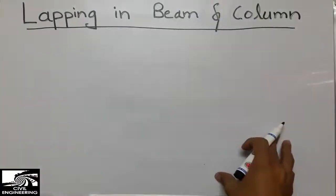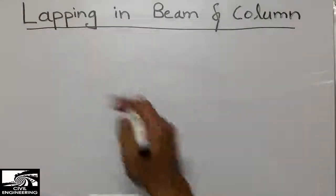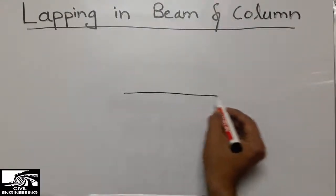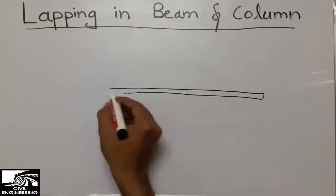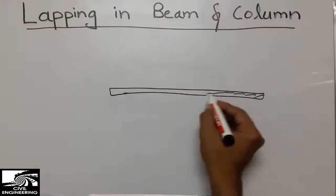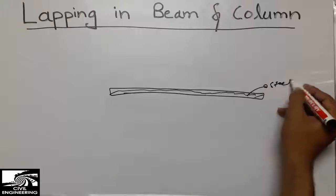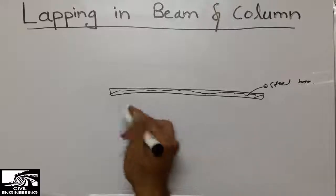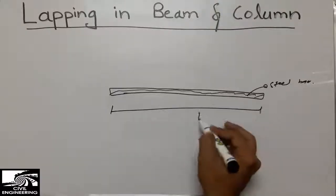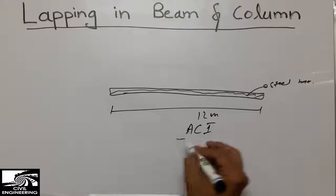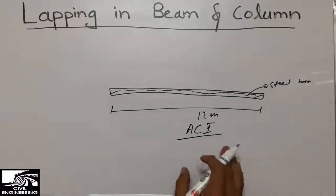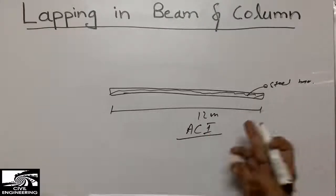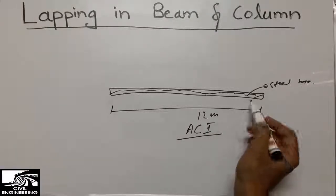What is lapping? A column or beam is a structural member. The lapping length is the length of the steel bar manufactured by companies. Steel bars may be grade 60 or grade 40, but the length of the bar should not exceed 12 meters. According to the ACI (American Concrete Institute), they don't allow the steel bar to be more than 12 meters.